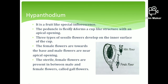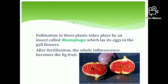The next one is hypanthodium, a fruit-like special inflorescence. The peduncle is fleshy and cup-shaped with an apical opening. On the inner surface of the cup, there are three types of sessile flowers: female flowers, male flowers, and sterile (gall) flowers. An interesting feature is that pollination in hypanthodium is carried out by a specific insect called Blastophaga. This hypanthodium inflorescence is seen in the fig plant, producing the fig fruit.